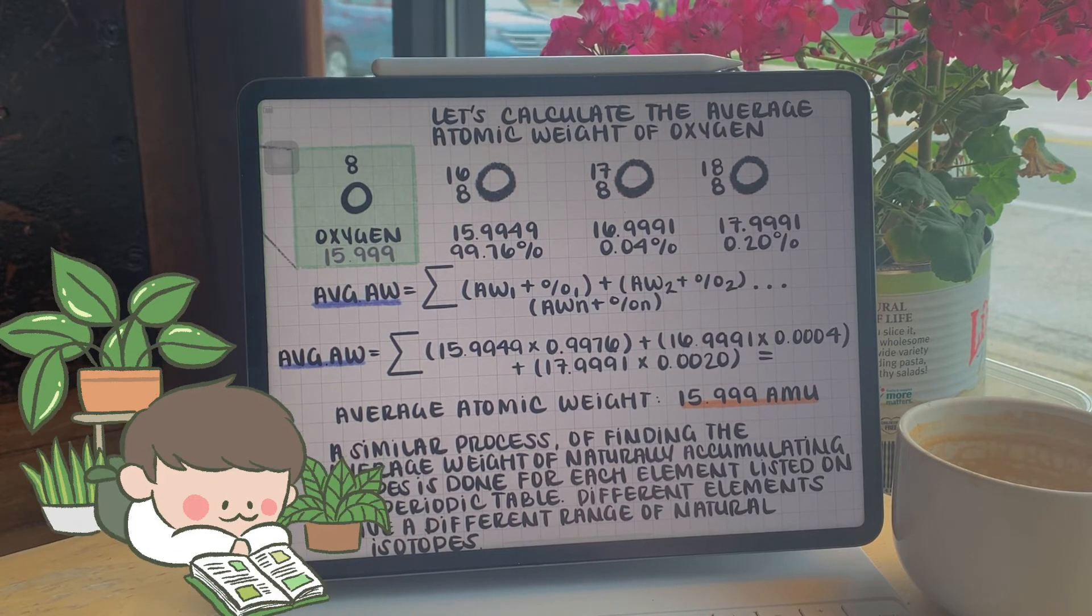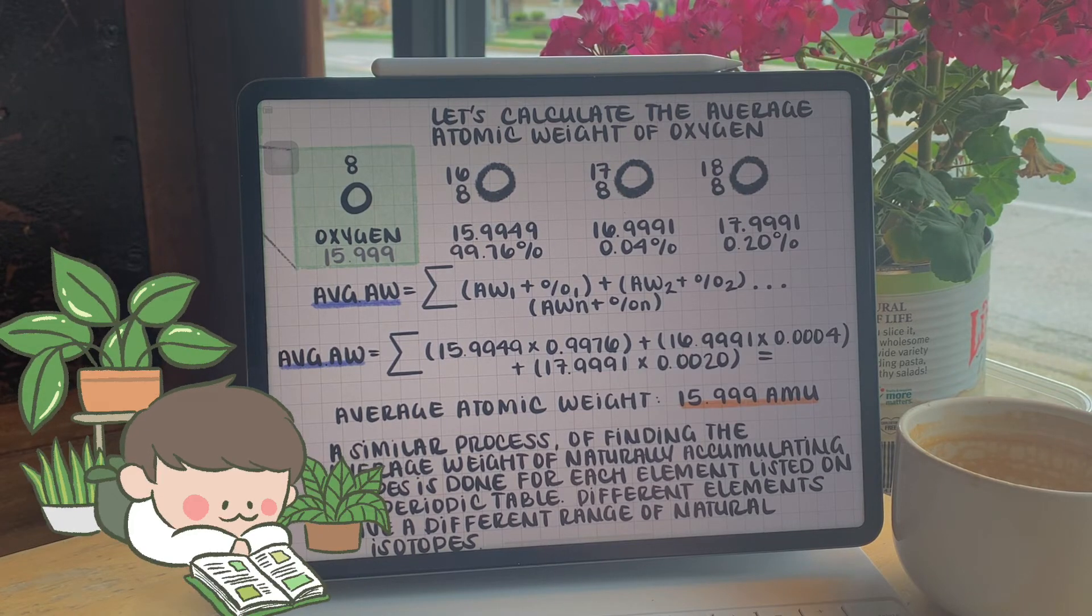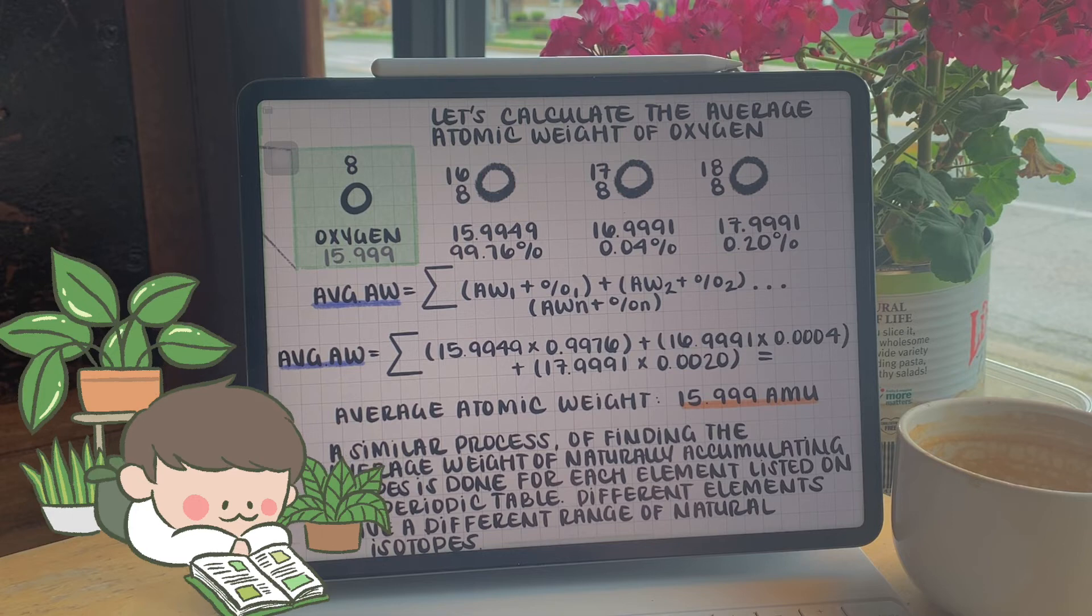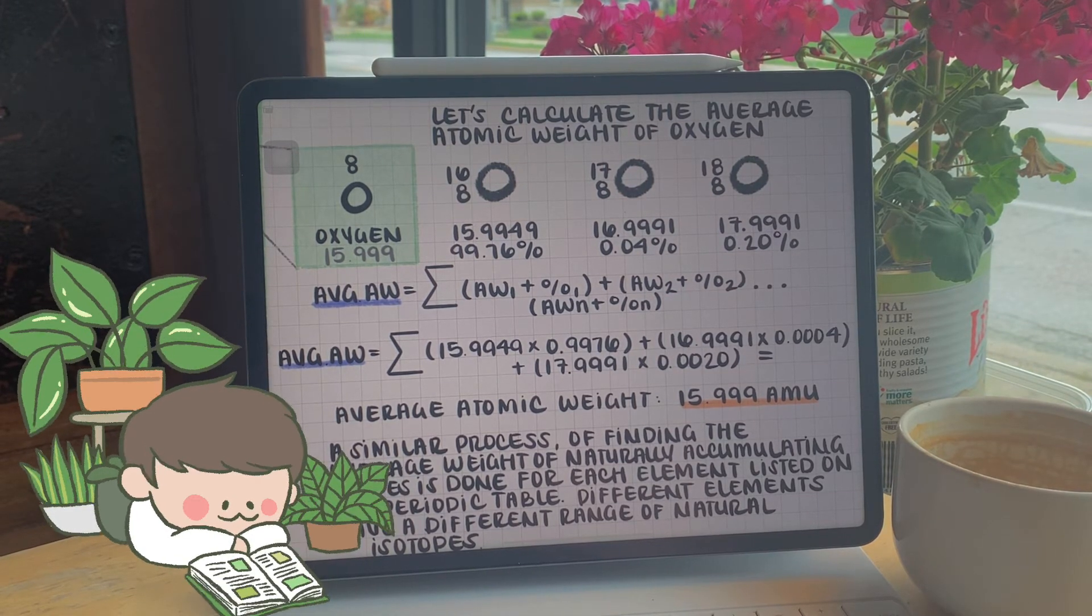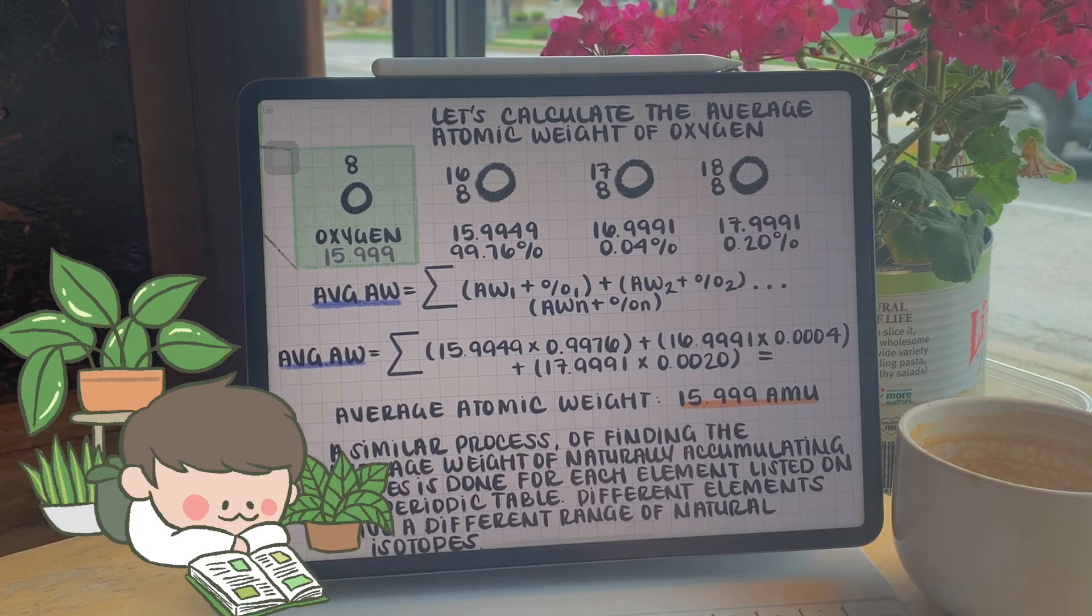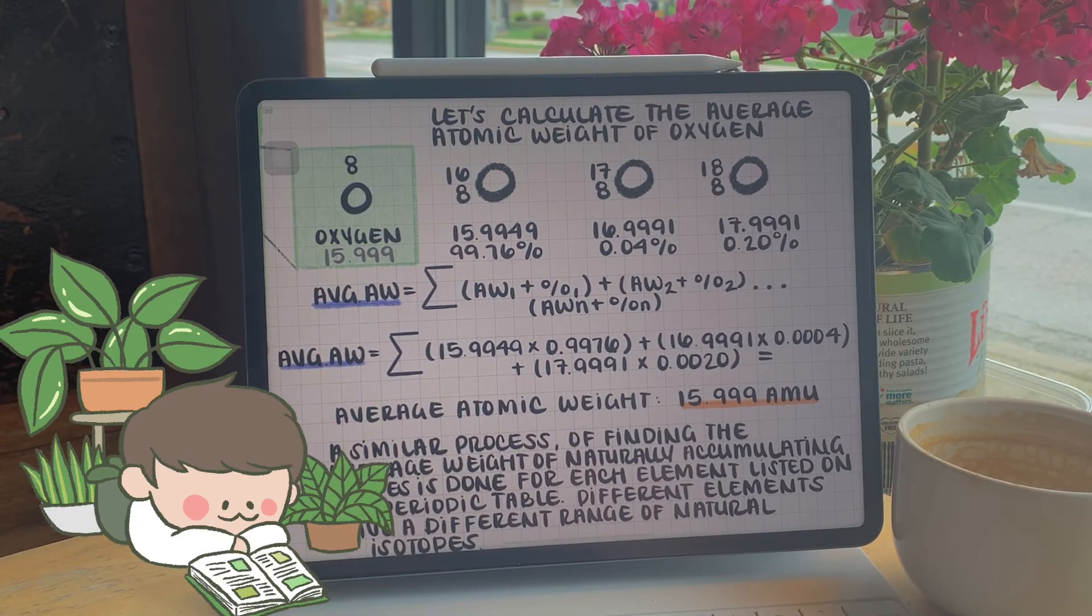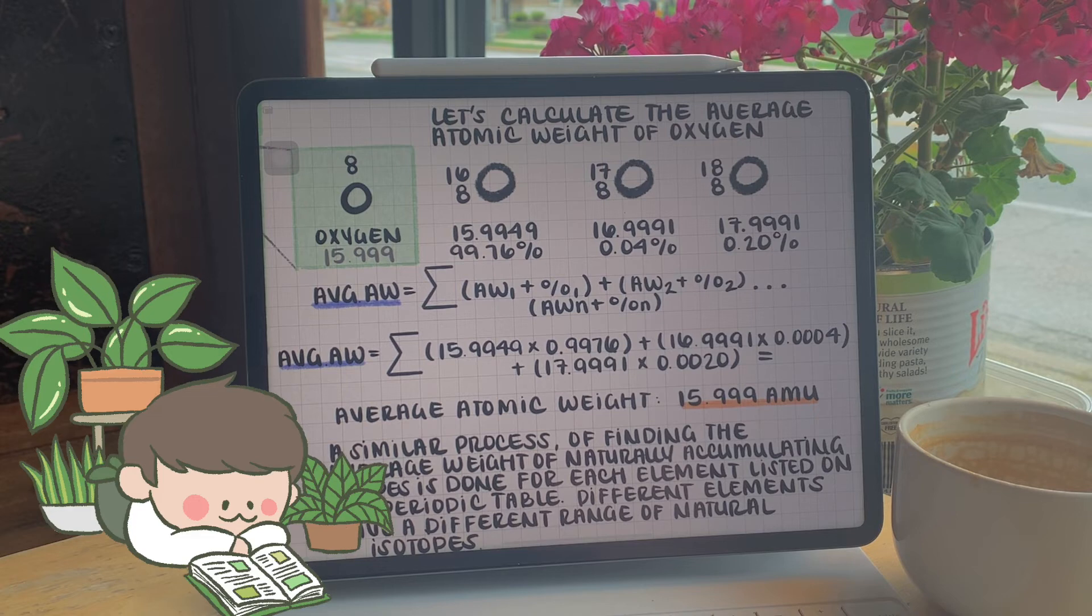Let's say you were asked to solve for the average atomic weight of oxygen with these three isotopes. You would take the atomic weight of each of the isotopes and multiply it by their abundance in nature. Then you would sum up all your values and you would get the average atomic weight of oxygen, the value listed on the periodic table.